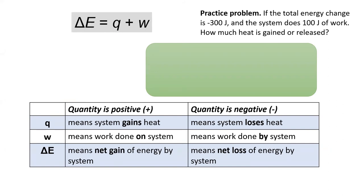In this problem, the system does work, so we know that work should be negative 100 joules. Solving for Q gives us negative 200 joules.